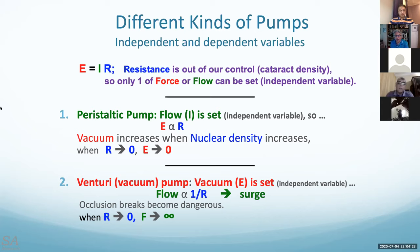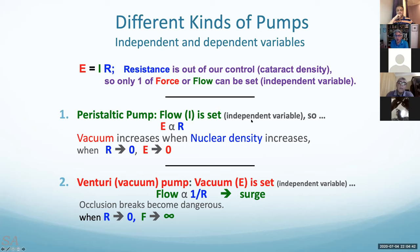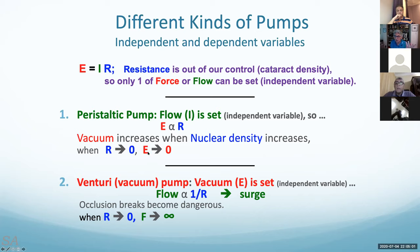It's important to understand that when you set a dependent and an independent variable, you cannot control R at all because it depends upon the lens. In a peristaltic pump, the rate of rise of the vacuum is proportional to the flow rate you have. When the resistance goes to zero — when you break through the nucleus — the force goes to zero. By its design, without any extra sensors, this is a safe design.